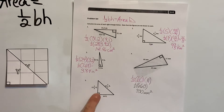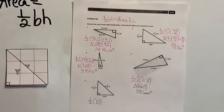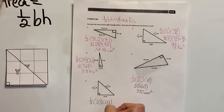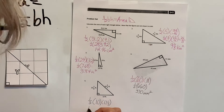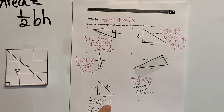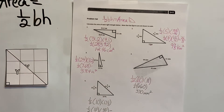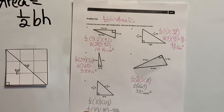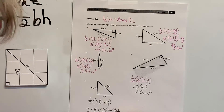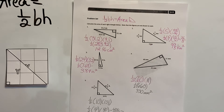The last one is upright, which makes it easy to find the base and the height. There's our perpendicular line. We have half of the base, which is 10, times the height, which is 13 and 1 third. We write 10 as 10 over 1 and convert 13 and 1 third to 40 thirds. Multiplying: 10 times 40 is 400, and 2 times 3 is 6, giving us 400 over 6.